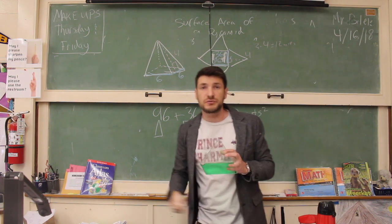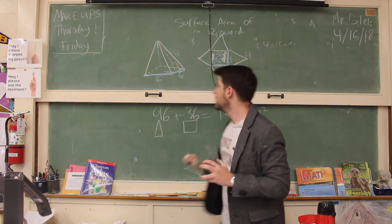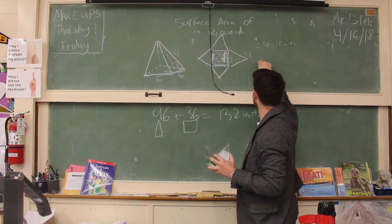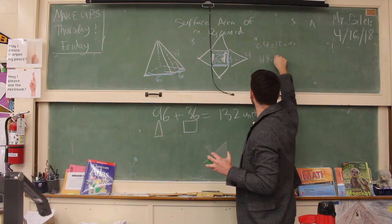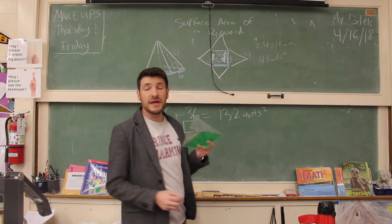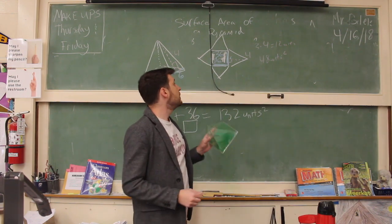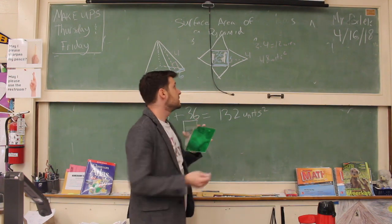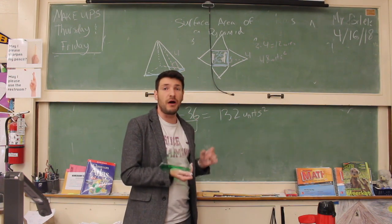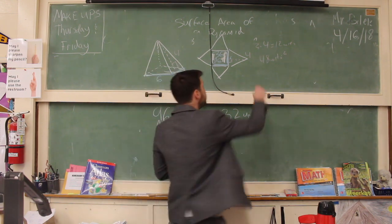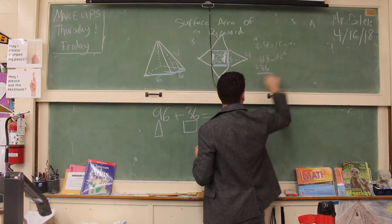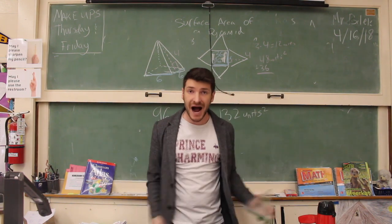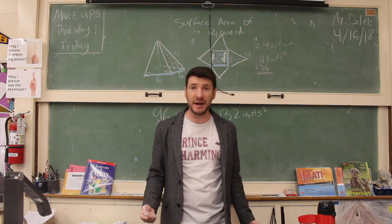If each triangle is 12 units squared, and there are 4 of them, that means all four triangles are going to be 48 units squared together. We have found that the bottom is 36, and each of the sides is 12. So 48 plus 36 will give us our entire surface area for the pyramid.